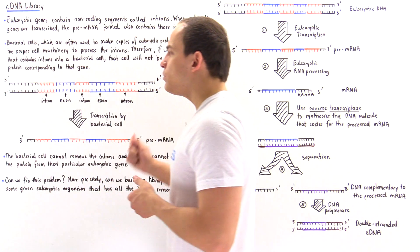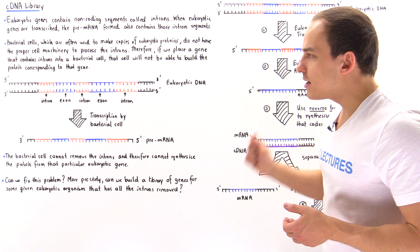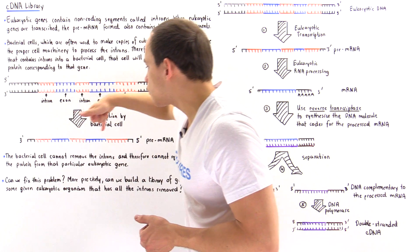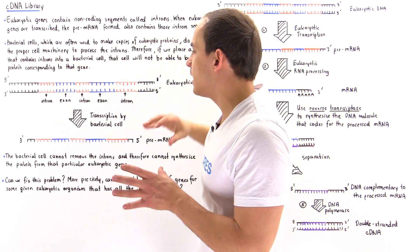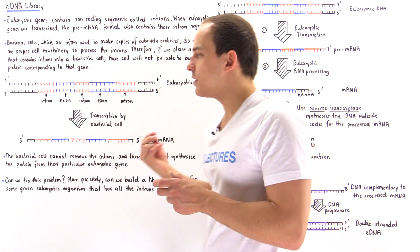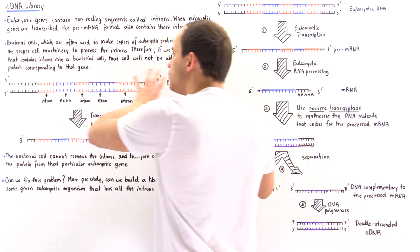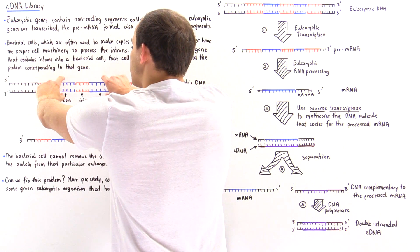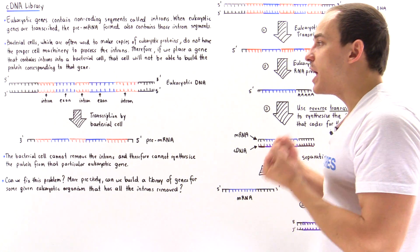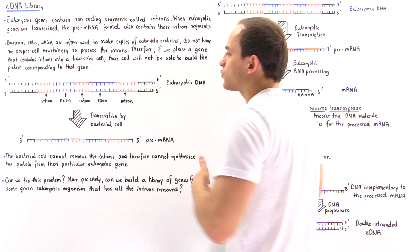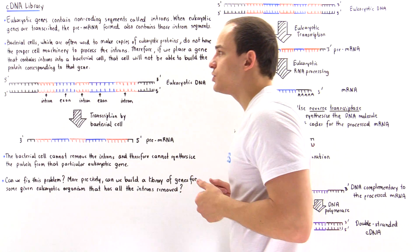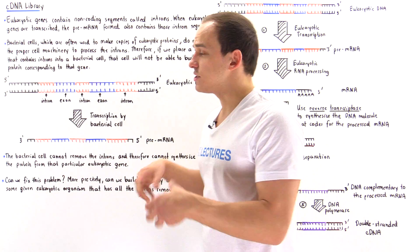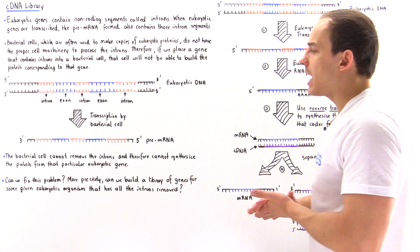The question is: can we somehow fix this problem? Can we create a eukaryotic gene that does not contain these intron sections? If we can take this eukaryotic DNA and remove these introns — simply splice together the blue sections — we form a gene without these useless intron sections. Then we take that gene, place it into the bacterial cell, and that bacterial cell won't have to worry about removing introns, so it can easily form that eukaryotic protein.